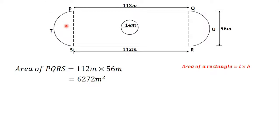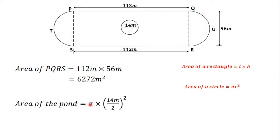We now have the area of both semicircles and the area of the rectangle. But the question says to find the area excluding the pond, so we need to find the area of the pond and subtract it. The pond is a circle with a diameter of 14 meters. The area of a circle is πR². R is the diameter divided by 2, so R = 14 ÷ 2. Therefore the area of the pond is π × (14 ÷ 2)², which gives us 153.94 meters squared.